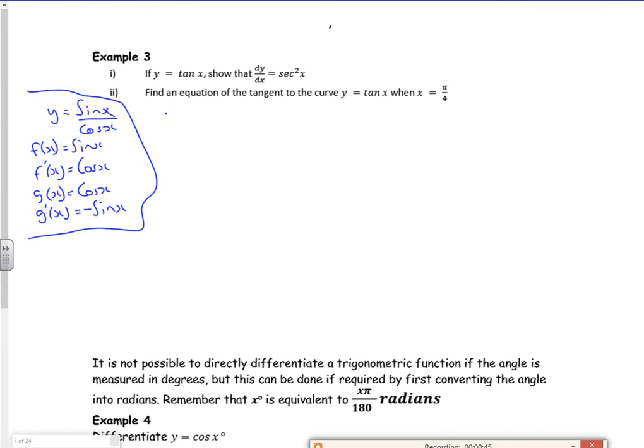So dy by dx, it's f dashed of x g of x, cos x cos x, minus g dashed of x f of x, minus sine x sine x, all over g of x all squared, cos x all squared. I'm rushing this because we've done it before.